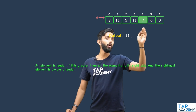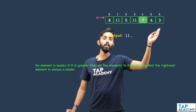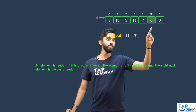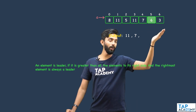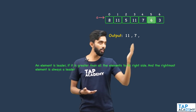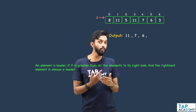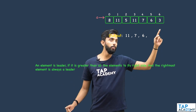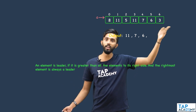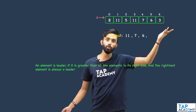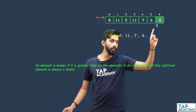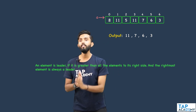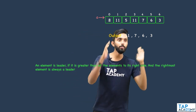Now 7: look at all elements to its right — 6 and 3 — all are lesser than 7, so 7 is a leader. Print it. Look at 6: only one element to its right which is lesser, so 6 is a leader. Print it. The rightmost element is always a leader because there are no elements to its right, so 3 is also a leader. The output is 11, 7, 6, and 3.